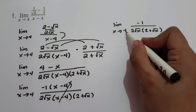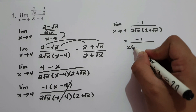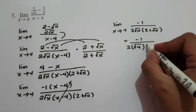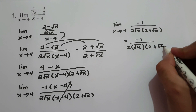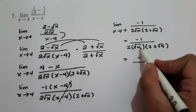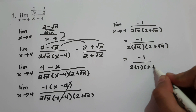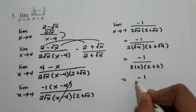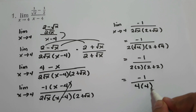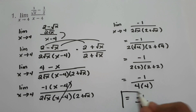We have limit as x approaches 4 of negative 1 over 2 square root of x times 2 plus square root of x. Now we can substitute the value of x, giving us negative 1 over 2 square root of 4 times 2 plus square root of 4. Square root of 4 is 2, so we have negative 1 over 2 times 2, which is 4, times 2 plus 2, which is 4. Our final answer is negative 1 over 16.